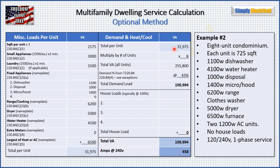Adding all these together, we get 31,975 VA per unit. Slide that number up and multiply by eight units, giving us 255,800 VA total building VA. Table 220.84 tells us that eight units gives us a demand factor of 43%. So 43% of 255,800 is 109,994 VA for our total demand load. No house loads, so 109,994 is our total VA. Divide by 240 single phase, and we get 458 amps for our service size.